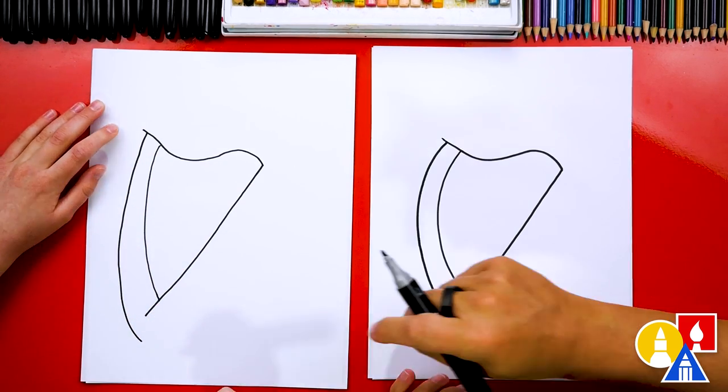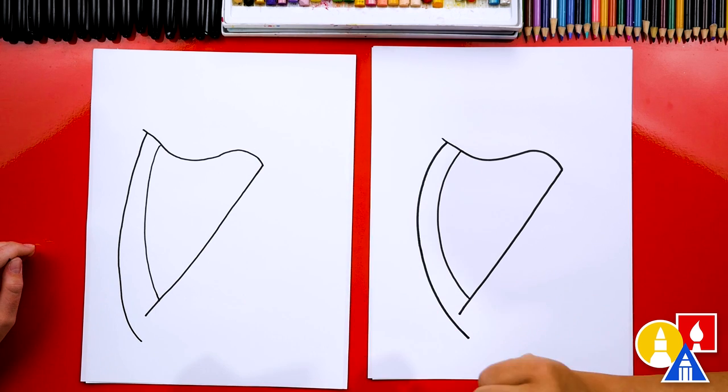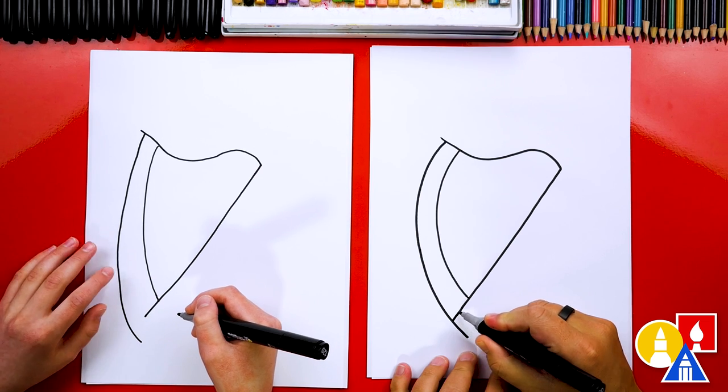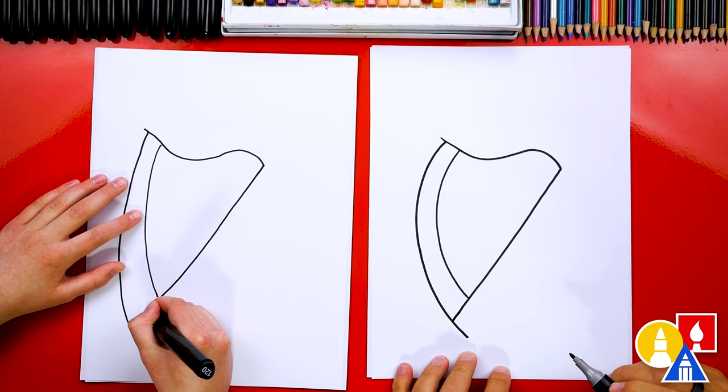We're practicing, right? Oh, and I like that. I like how thick it got down at the bottom. And now we can draw this line right here. I'm going to connect it there. There you go.